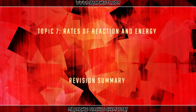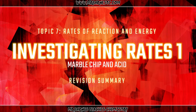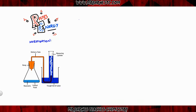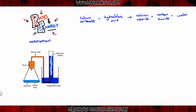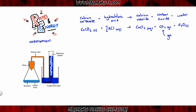Let's get started with the first investigation: how you can investigate rates of reaction. We're going to use the equipment on the left-hand side and carry out the reaction where calcium carbonate marble chip reacts with hydrochloric acid. This produces calcium chloride, carbon dioxide, and water. The symbol equation is: CaCO₃ (s) + HCl (aq) → CaCl₂ (aq) + CO₂ (g) + H₂O (l). The key thing is that a gas is produced — you will see bubbles, and those bubbles can be collected and measured.